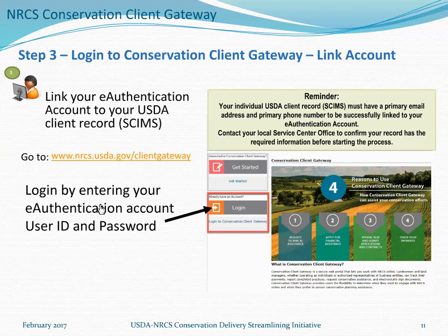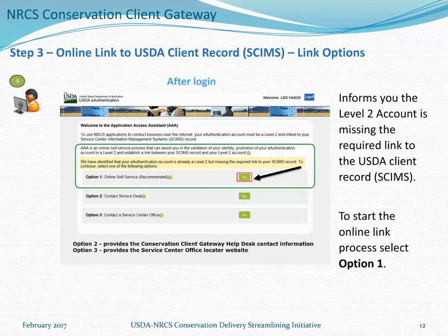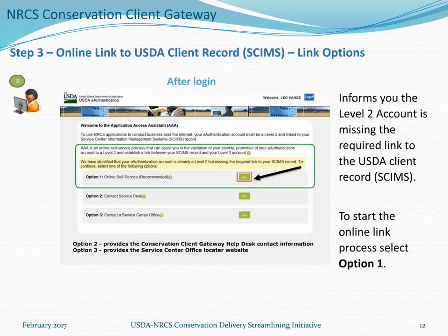To start the linking process, go to the Conservation Client Gateway homepage at www.nrcs.usda.gov, then log in by entering your eAuthentication user ID and password. After login, the page will inform you your account is Level 2 but is missing the required link to the USDA client record. Selecting Option 1 takes you through the online self-service process to link your eAuthentication account to your USDA client record. Option 2 provides Conservation Client Gateway Help Desk contact information for assistance. Option 3 provides a link to the Service Center Locator website to find a Service Center office for help.